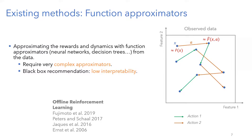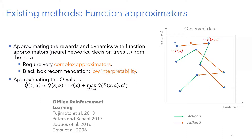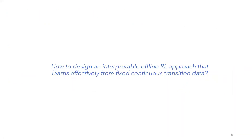For those familiar with Q-values, this is essentially equivalent to approximating the Q-values of the system. So this is what is done in the literature. The question now is: can we design some interpretable offline reinforcement learning approach — by offline I mean no exploration — that learns efficiently and effectively from the data?